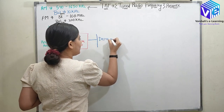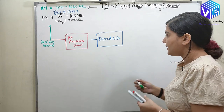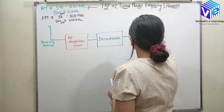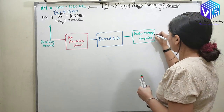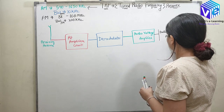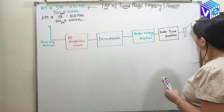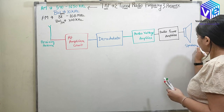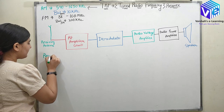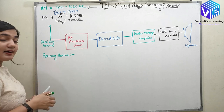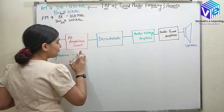After the RF amplifier we have a demodulator. I have already discussed a lot of AM demodulators, so this demodulator can be any one of them. After that we have an audio voltage amplifier, and after that an audio power amplifier connected to the speaker. The receiving antenna is extracting the signal from the EM waves which are falling on it, converting those EM waves into electrical signals.